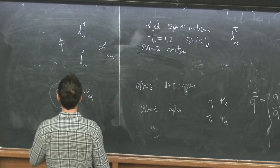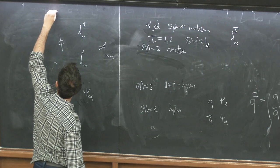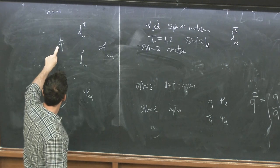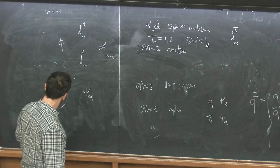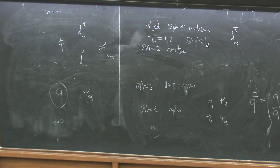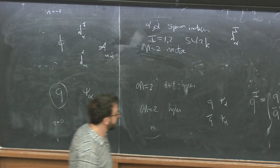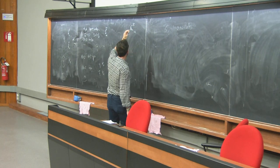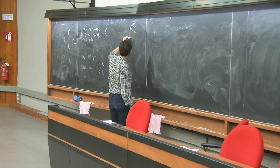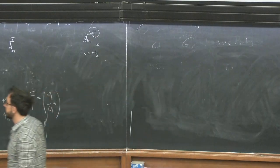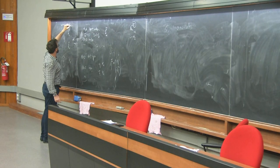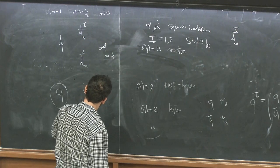This complex conjugation is necessary to make manifest the transformation properties under SU(2)_R. In my notation, Q and Q-tilde are both N=1 chiral multiplets, but in this N=1 notation the SU(2)_R transformation properties are a little bit hidden. In my conventions the U(1)_R assignment is minus 1 for the complex scalar in the vector multiplet, and it must be 0 for the complex scalar in the hypermultiplet.